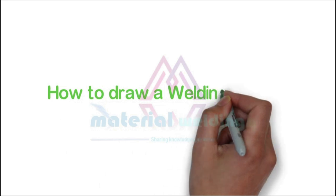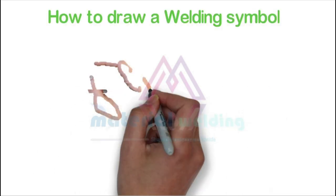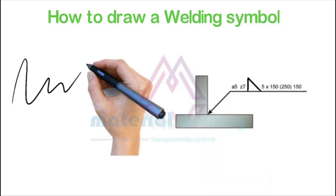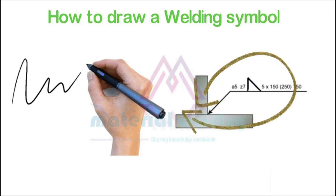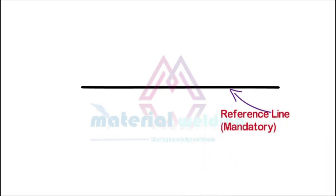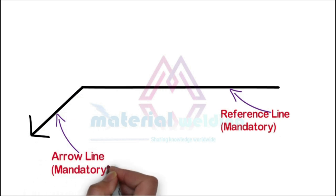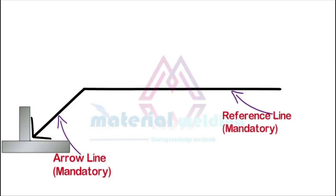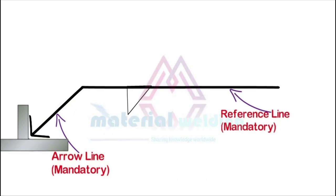Let us learn how a welding symbol is drawn on a drawing and what are the different parts of the welding symbol and their purposes. A welding symbol consists of several elements. The horizontal reference line, arrow line, and weld symbol are the mandatory elements. The horizontal line, called the reference line, is the main part of the welding symbol, as weld symbols are placed on it. The arrow line connects with the reference line, and the arrow of the completed welding symbol points to the location or area to be welded.